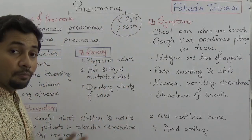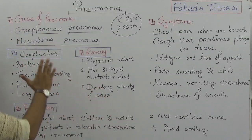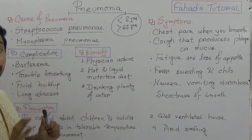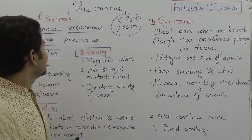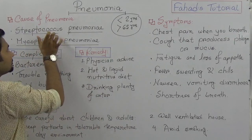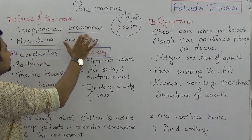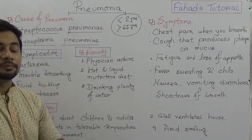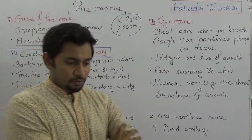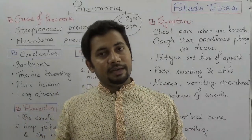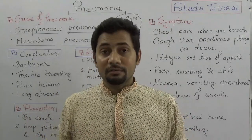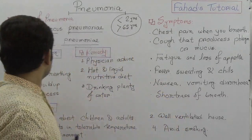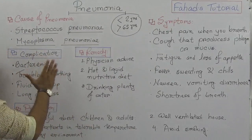What are the causative agents? Number one, the pneumococci — that is Streptococcus pneumoniae — and Mycoplasma pneumoniae. So pneumonia can be viral, bacterial, or even fungal in nature.